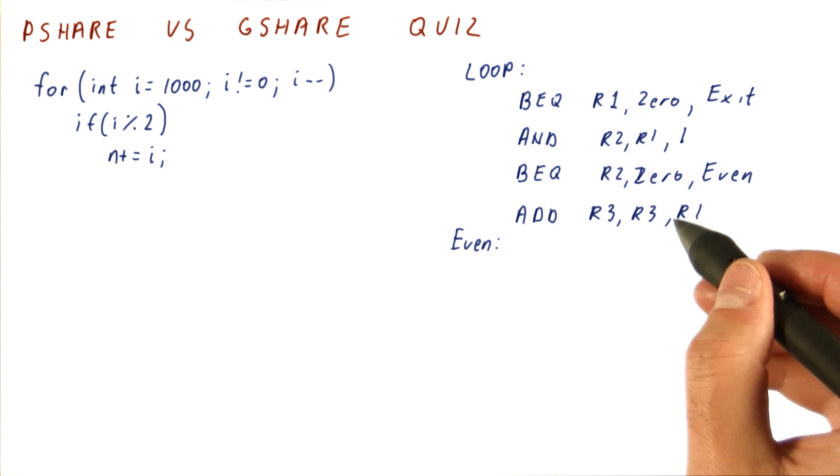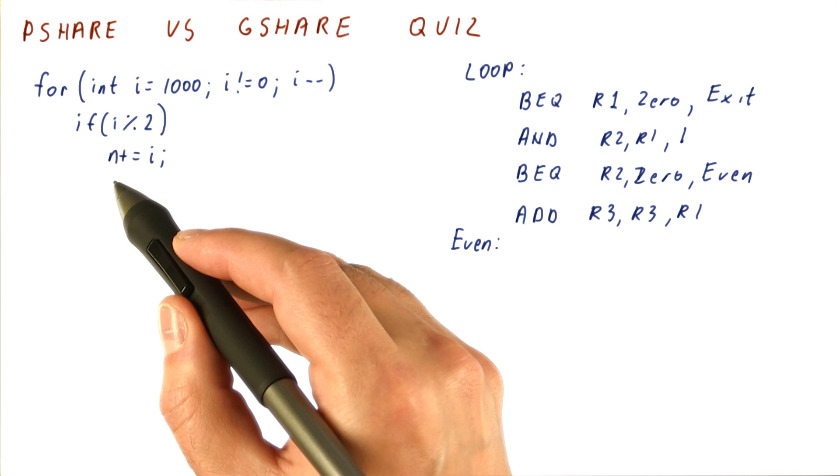If the number is odd, then we add it to r3, which in this case is representing n.